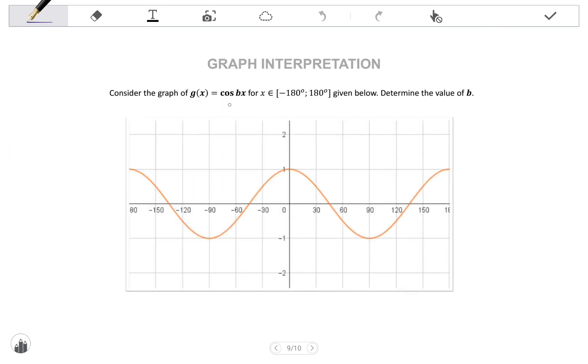Second example, consider the graph of g of x equals cos bx for the given domain given below. Determine the value of b. Here they've told us it's a cos graph and b as the coefficient of x means that the period has been altered. For a cos graph, our period is 360 degrees divided by the value of b.